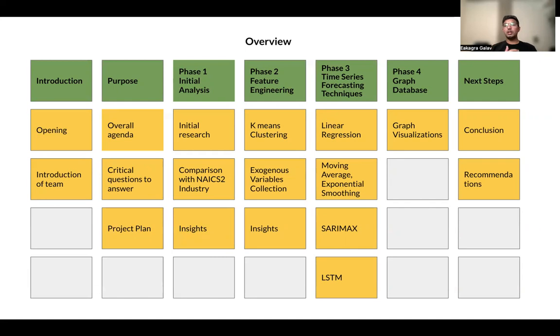In Phase 2, we used feature engineering where we did k-means clustering and collected extra exogenous variables to use them in Phase 3, along with insights from the k-means clustering and exogenous variables.